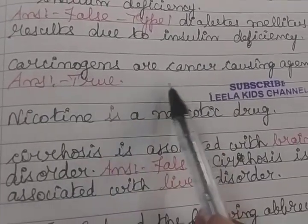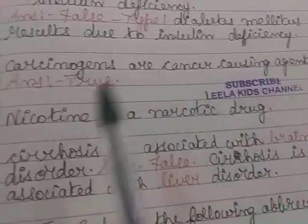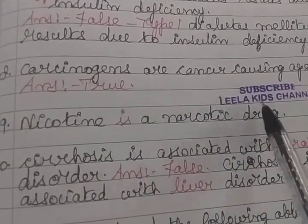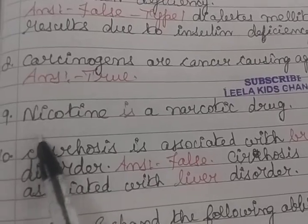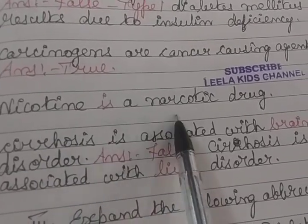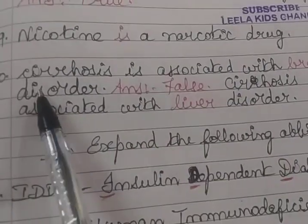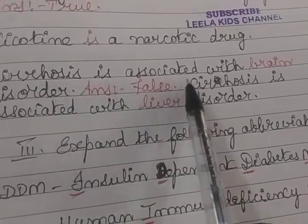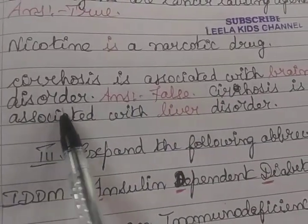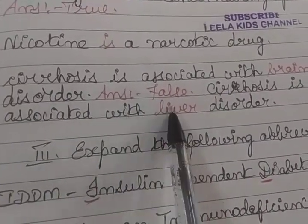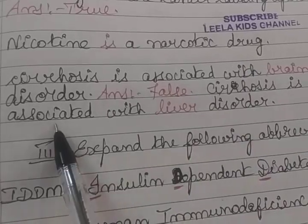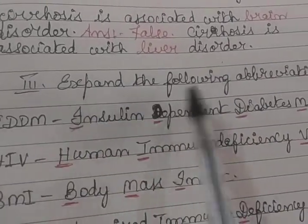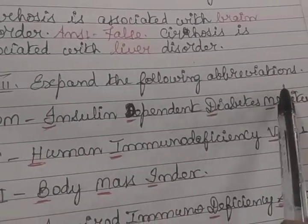Carcinogens are cancer causing agents. Answer: true. Nicotine is a narcotic drug. Cirrhosis is associated with brain disorder. Answer: false. Cirrhosis is associated with liver disorder.